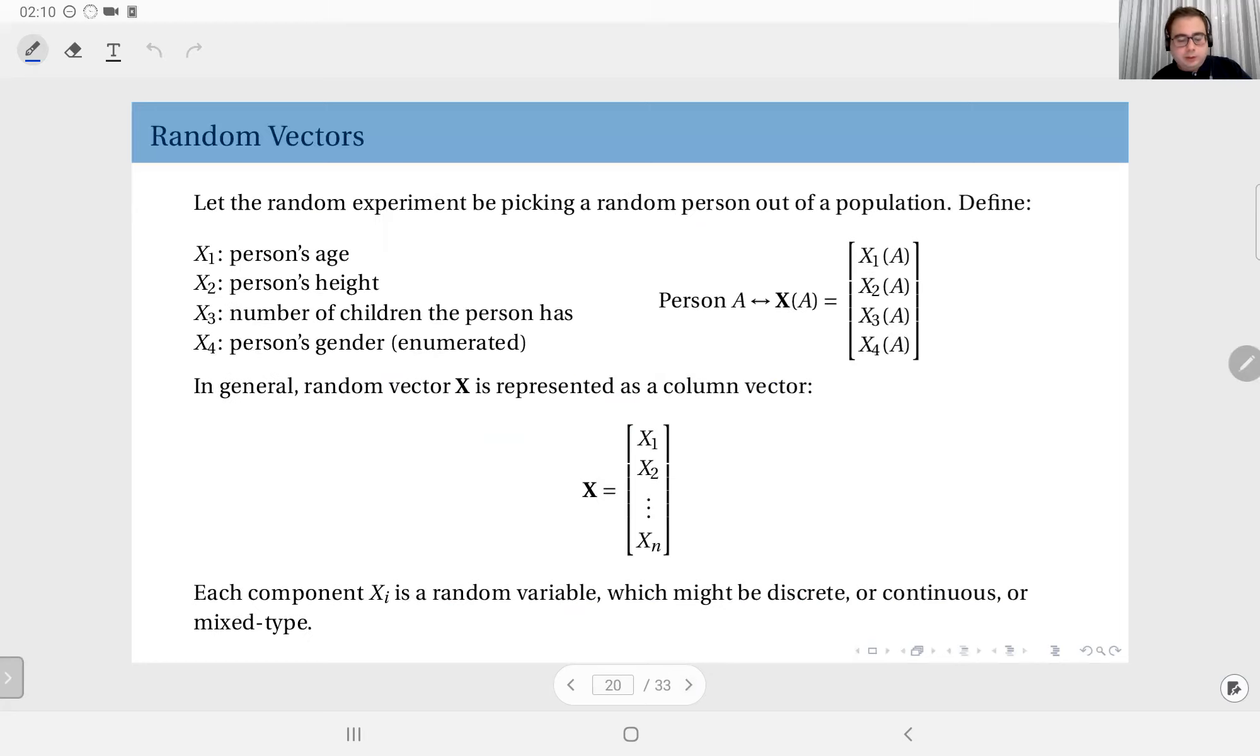Here's a simple example. Let the random experiment be picking a random person out of a population. We will define a random vector where the components will be X1: person's age, X2: person's height, X3: the number of children that person has, and X4: gender, which is enumerated because it is discrete.